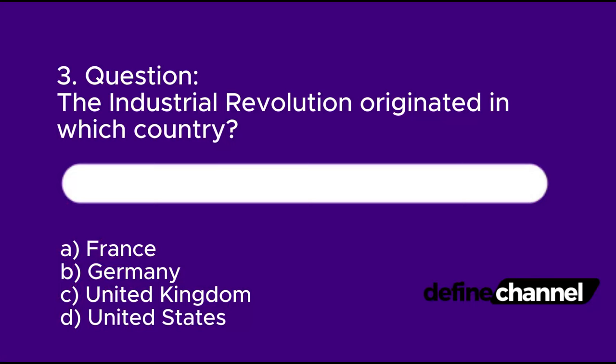Question 3: The Industrial Revolution originated in which country? A. France, B. Germany, C. United Kingdom, D. United States. Please determine which is the correct answer.